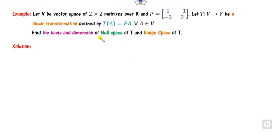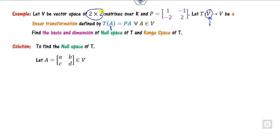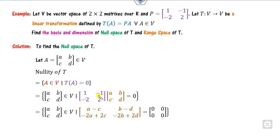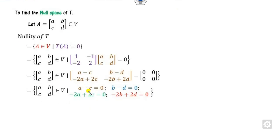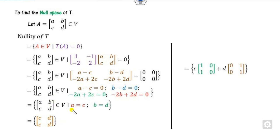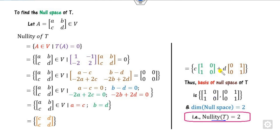The third example involves a matrix transformation where the domain is 2×2 matrices. We take any element A from the domain and apply T(A) = PA = 0, where P is a given matrix. Multiplying out, we get conditions: A = C and B = D. Substituting these, we find two independent basis matrices for the null space. Therefore the nullity is 2.